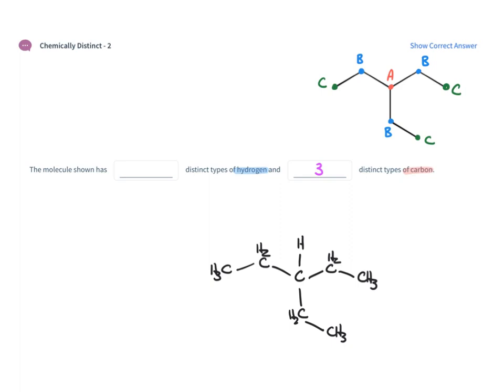This is very similar to the carbons that we identified. So now we have the hydrogen on the central carbon — that's one type, type A. Then we have the two hydrogens on the CH2 groups. At one CH2 those two hydrogens are equivalent, but also the two hydrogens on each of the other CH2 groups are all indistinguishable — so that's type B. And the same thing with the CH3: all of those CH3s are indistinguishable, that's type C. So this molecule has three types of hydrogen as well.